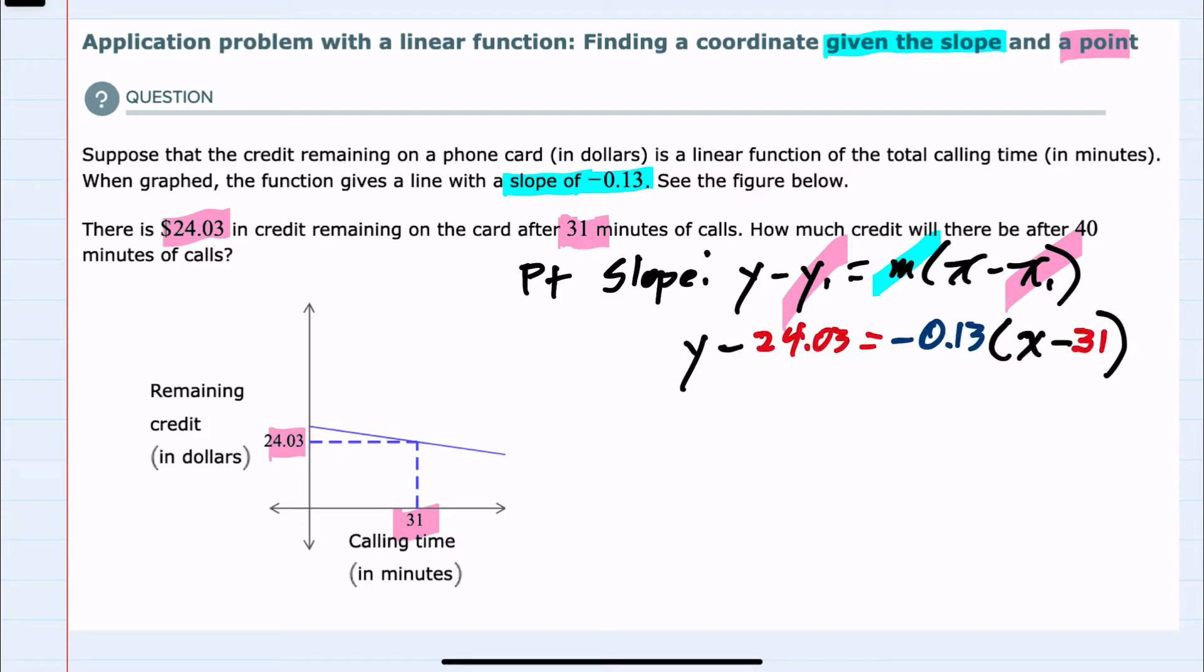Once we've made the substitutions, we can solve for y first by distributing on the right-hand side to get negative 0.13 times x and then a negative times a negative is a positive 0.13 times 31 plus 4.03.